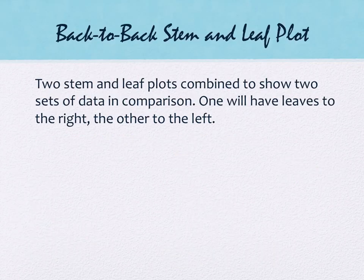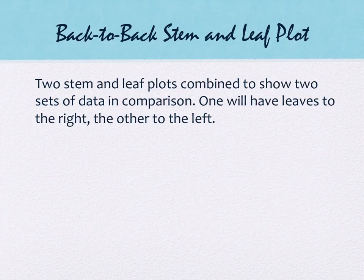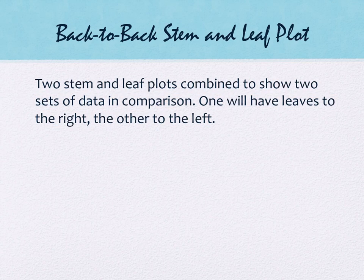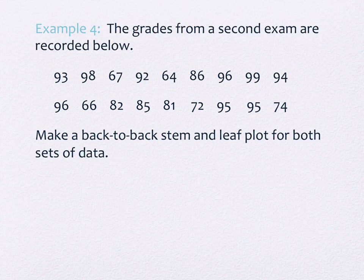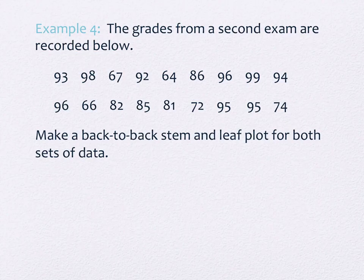Now we have two sets of leaves — a back-to-back stem and leaf plot. The stems go in the middle, leaves on the right as before, and there will also be leaves on the left. We have a second set of data — the second exam from the same class, real data. We need to make a back-to-back stem and leaf plot for both sets. First, I need to get the second set into a stem and leaf plot.